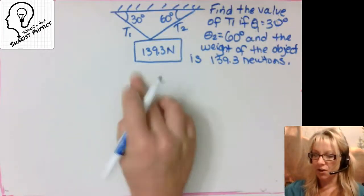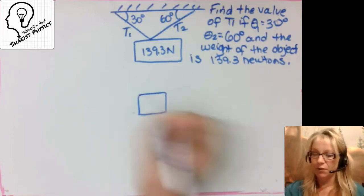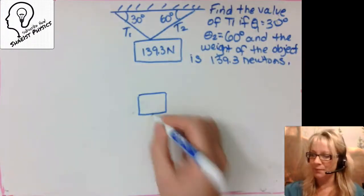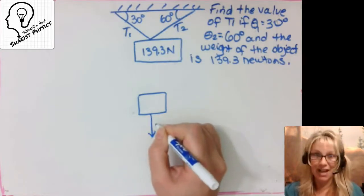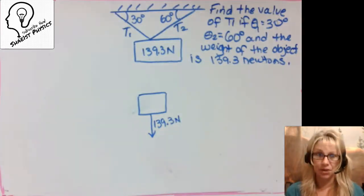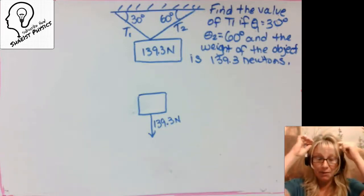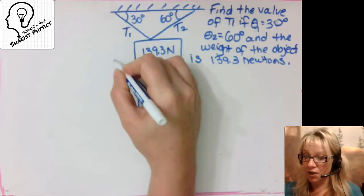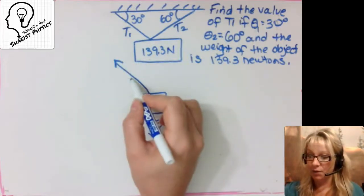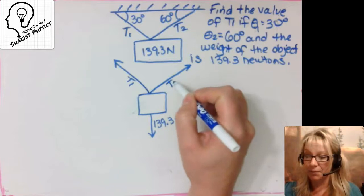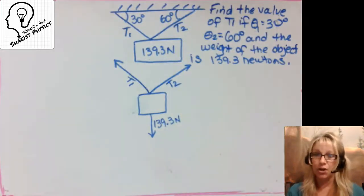So again, we always get started the same way with a free body diagram of our object. As long as we're on the planet Earth — that's an assumption — we have our force of gravity acting down, and they gave that to us as 139.3 Newtons. There is no normal force; it's not being supported by anything other than the cables pulling up. So imagine I'm the box: I'm being pulled on by a rope this way, so that force is T1. I'm also being pulled on by the other rope or cable by a tension force, and we're calling that T2.